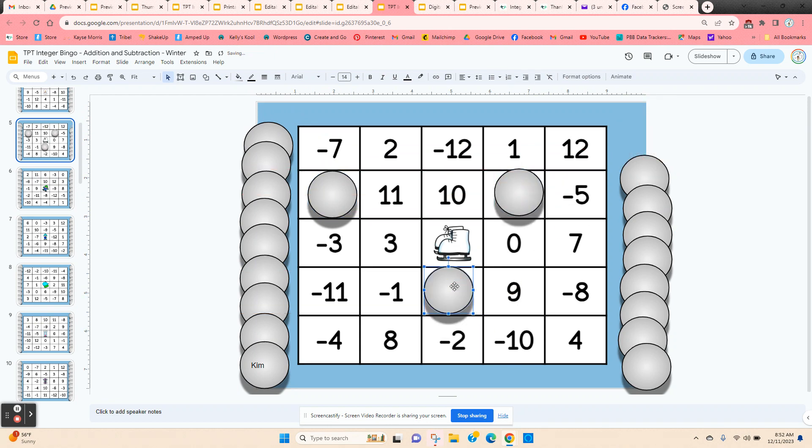Once they get five in a row, they can call out bingo. If you want to check their answers, just have them move these chips to the side and then that way you can check and see if their answers are correct.